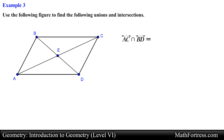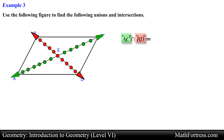Here we are asked to find the intersection of line AC and line BD. The set of all points forming line AC and those forming line BD are represented in the figure. Since we are looking for the intersection of these two lines, we see that they have point E in common, so the intersection of these two lines is the set that contains point E.